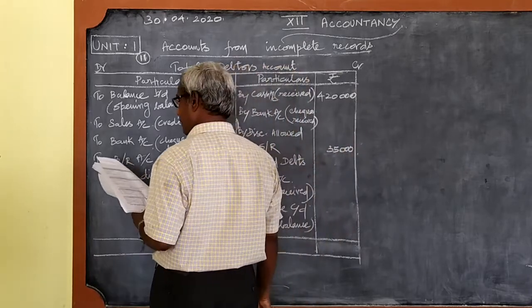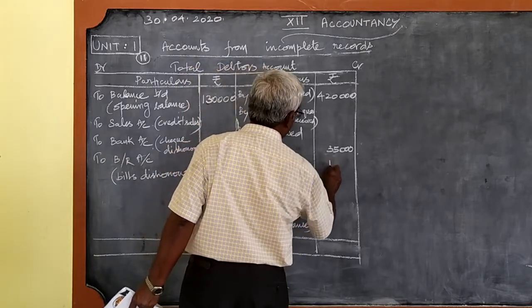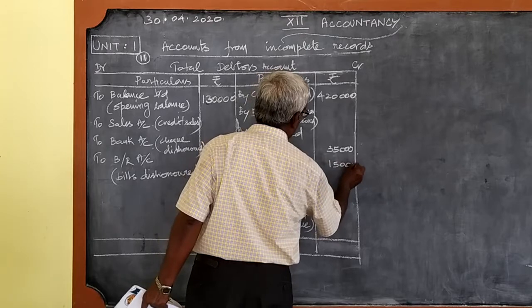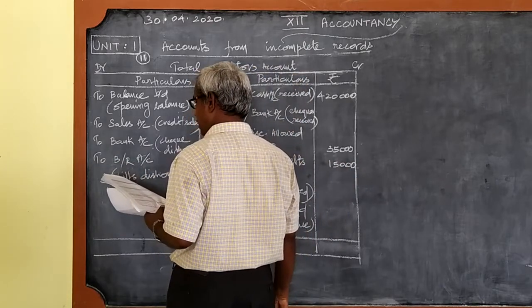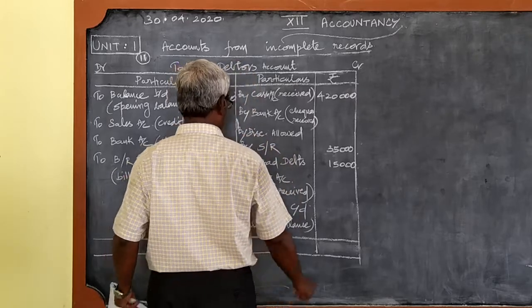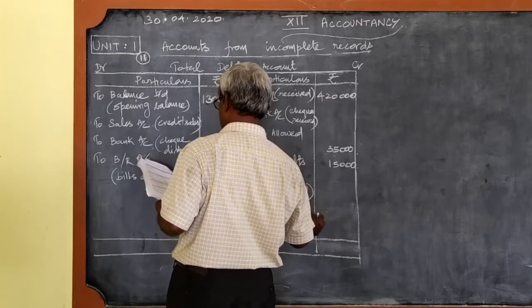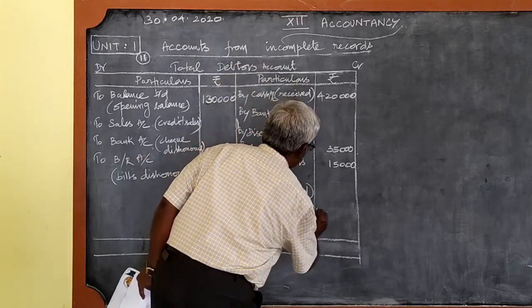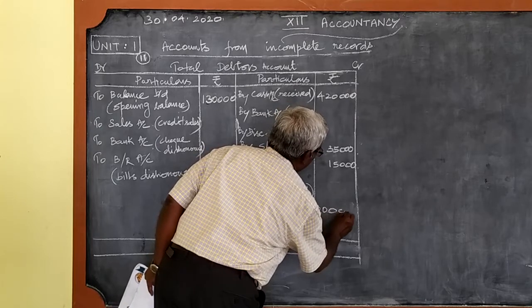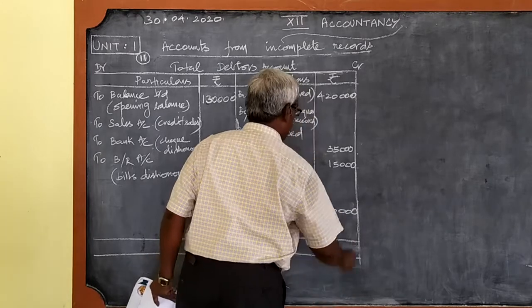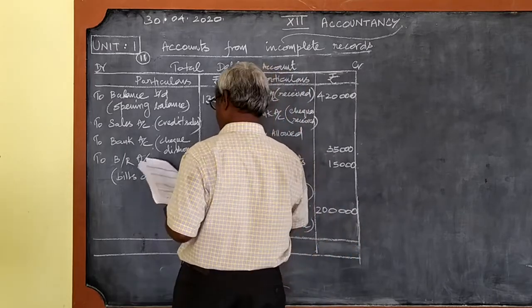Bad debts 15,000. Debtors on 31st December, that is closing debtors on 31st December 2 lakhs, balance carried on, that is closing balance 2 lakhs.